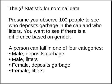Here's a brief explanation of the chi-squared statistic for nominal data. Presume that you observe a hundred people to see who deposits garbage in the can and who litters, and you want to see if there's a difference based on gender. This is categorical data, or nominal data, because a person can fall into one of four categories.